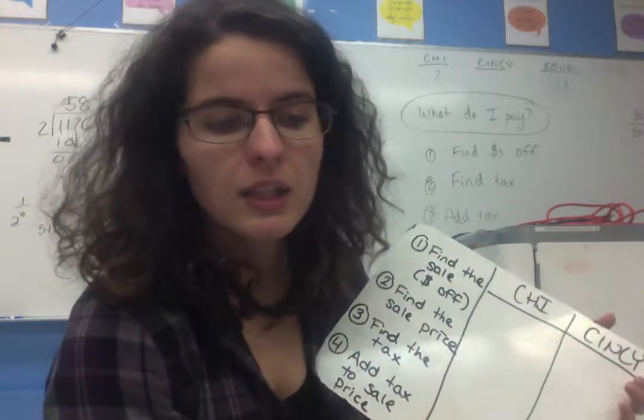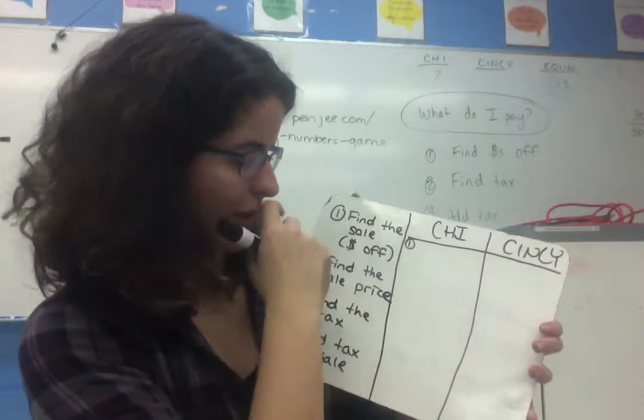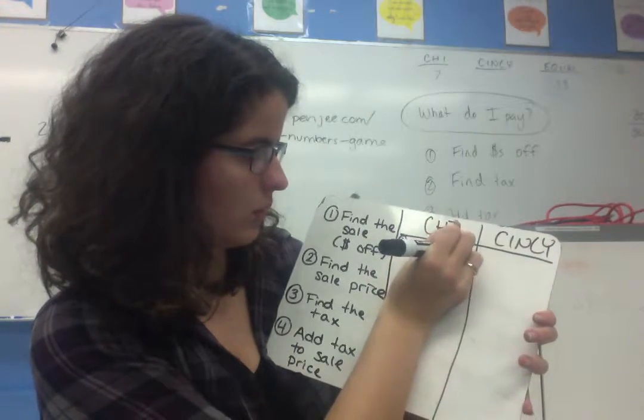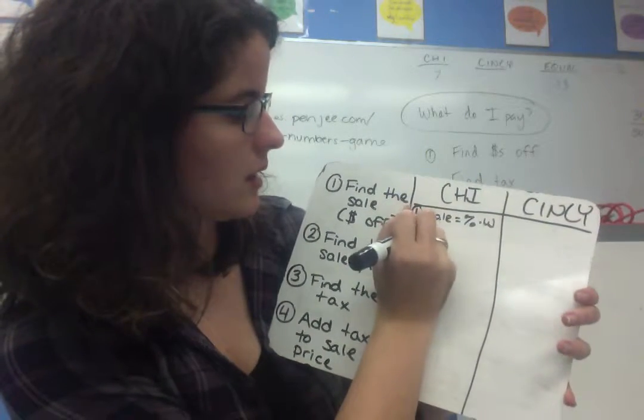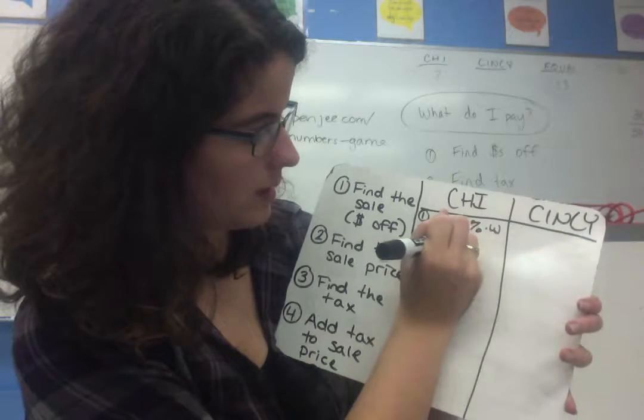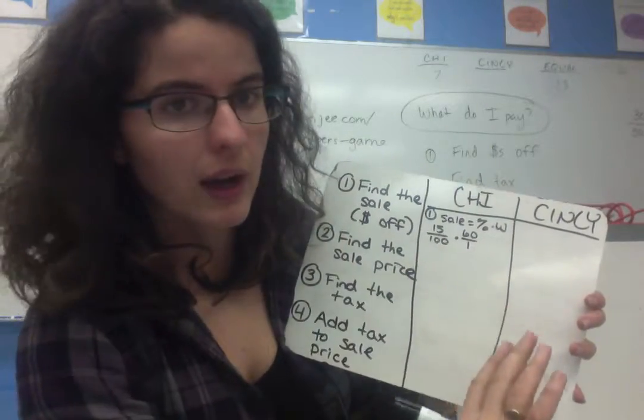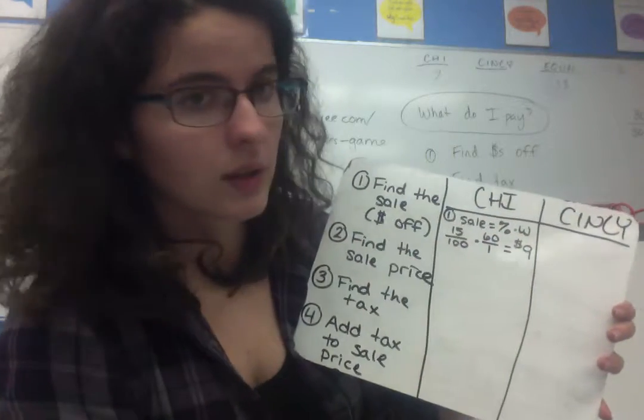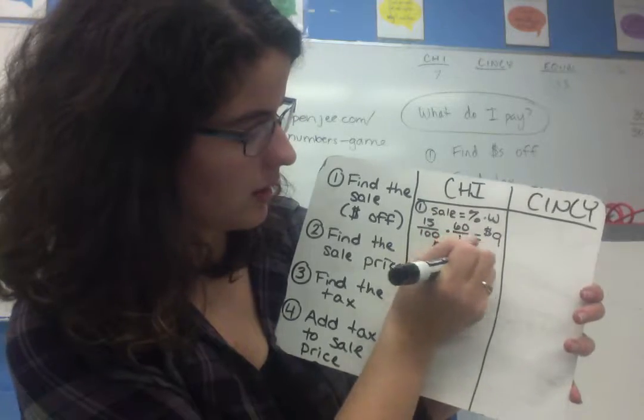Most people decided to use that part equals percent times whole equation since we're missing the part. You would start with the sale equals percent times whole, which means our sale was 15%, which you could say is 15 hundredths times 60, and we had people that said that would be the same as 60 over 1. Once you multiplied across and simplified, people ended up saying that this was going to be $9.